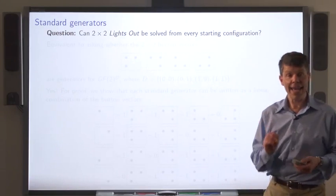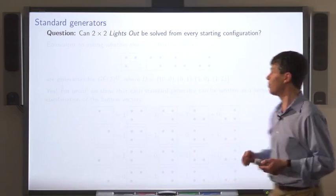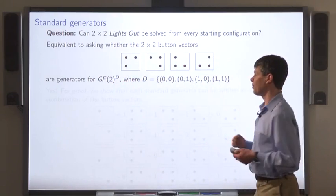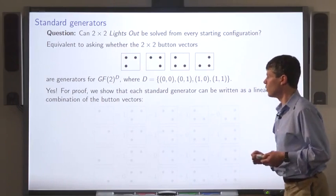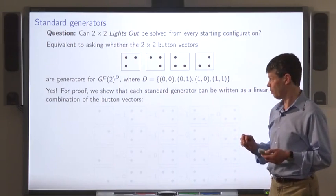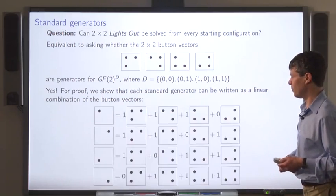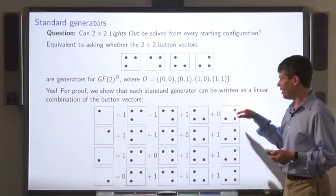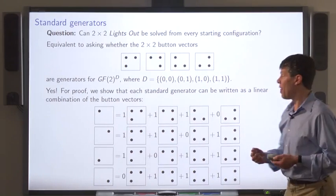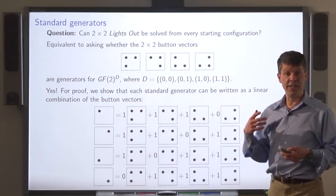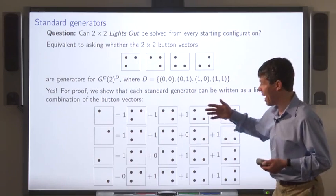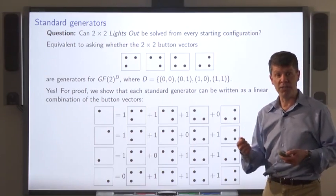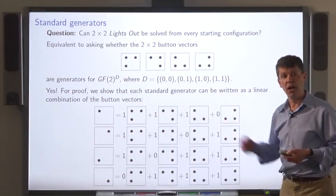Consider the question: can 2×2 Lights Out be solved regardless of the starting position? What we're asking is whether the 2×2 button vectors are generators for the set of all initial states. The answer is yes. We show that each of the standard generators can be written as a linear combination of the button vectors. We already know that the set of all states is the span of the standard generators, and now we've shown each standard generator can be written in terms of the button vectors. It follows that each possible state for 2×2 Lights Out can be written as a linear combination of the button vectors.